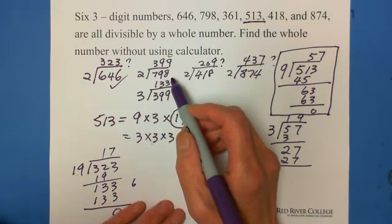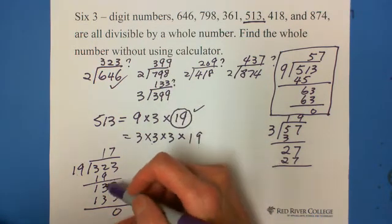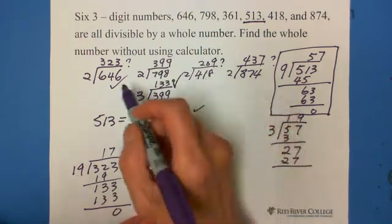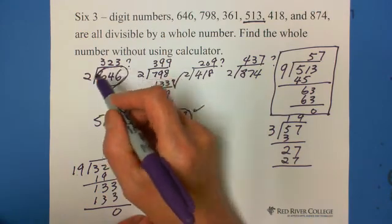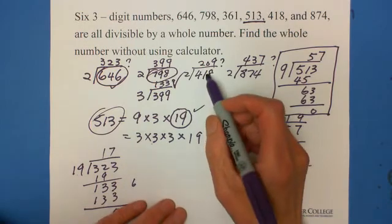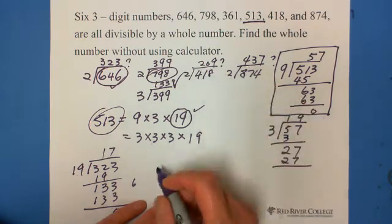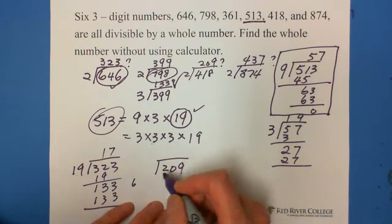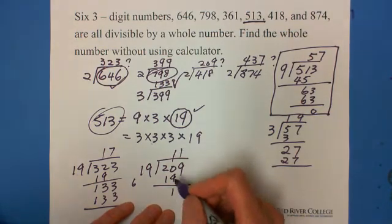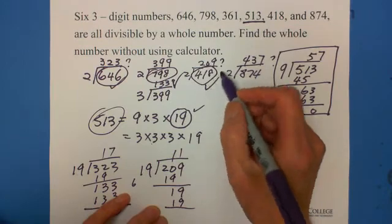And 798, after divided by 2 is 399, then divided by 3 is 133. 133 is divisible by 19. So this one is 19 times 7. This is okay. And 418, after divided by 2 is 209. Let's see if 209 divided by 19: 1 times 19 is 19, this is 11 times 19. Okay, this is also divided by 19.